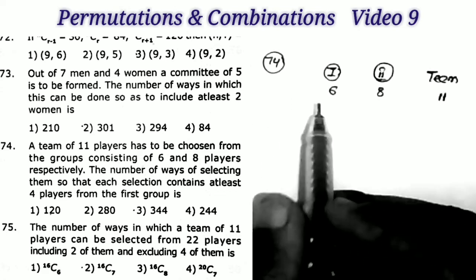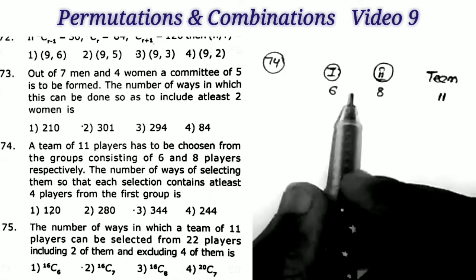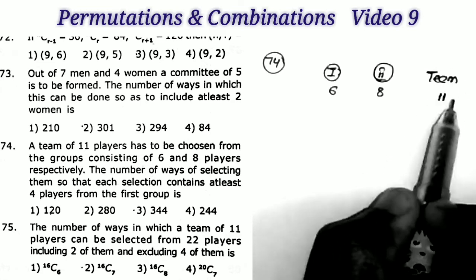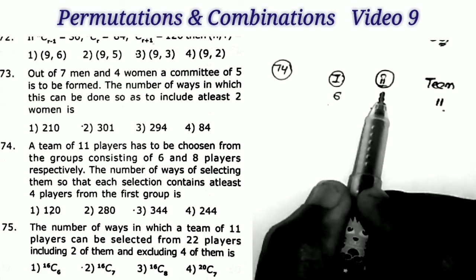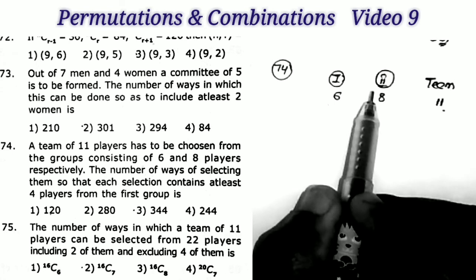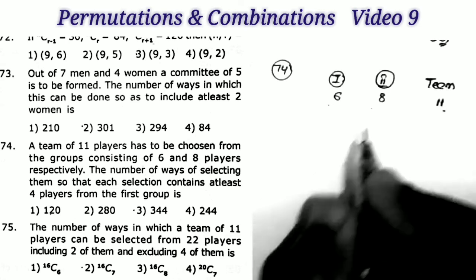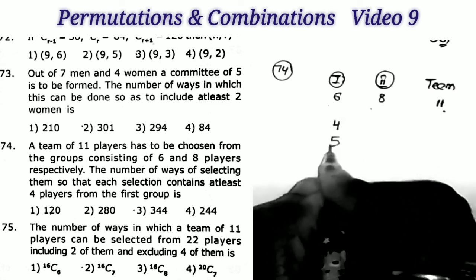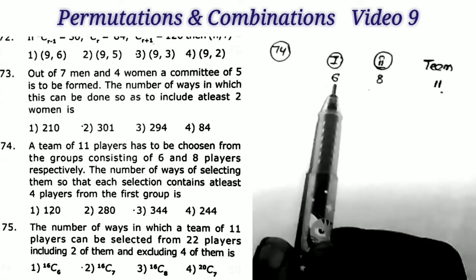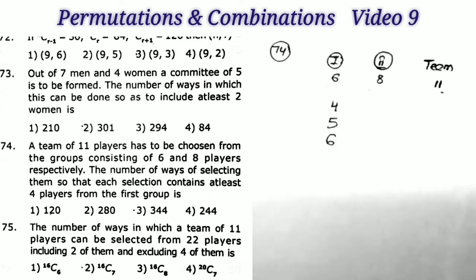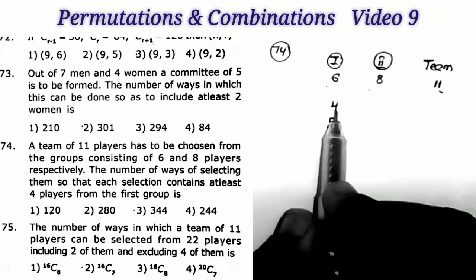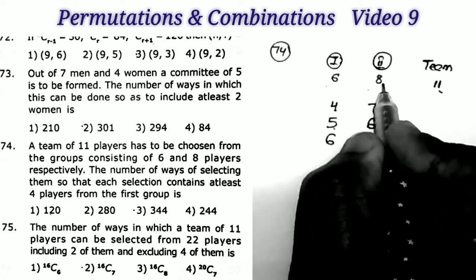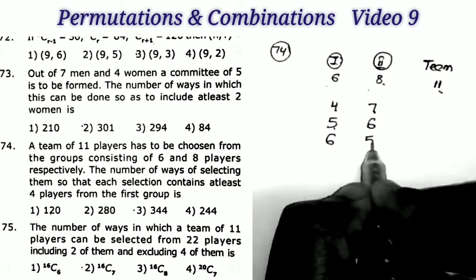Next problem, number 74: a team of 11 players is to be chosen from two groups consisting of 6 and 8 players respectively. The condition is each selection must contain at least 4 players from the first group. So we select 4, 5, or 6 from group 1. If 4 selected from group 1, remaining 7 come from group 2. If 5, remaining 6 from group 2. If 6, remaining 5 from group 2.